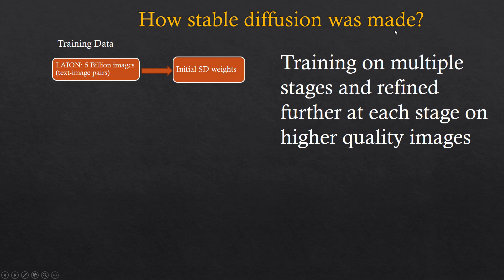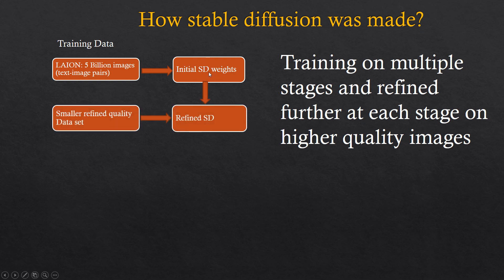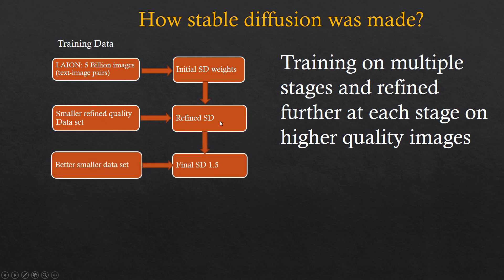How Stable Diffusion was actually made in a simple way: initially, Stable Diffusion was trained on a large dataset of 5 billion images. These images are tagged text and image, which created the initial Stable Diffusion weights. After that, it was refined with smaller datasets, then refined further and further till we produce the final Stable Diffusion that we are actually using. The refining is performed over a smaller dataset — we start with 5 billion, then go to a couple of hundreds of millions, then down to a couple of millions, to produce the Stable Diffusion eventually, because it's a very expensive process.